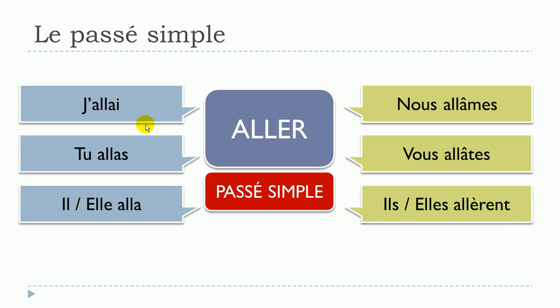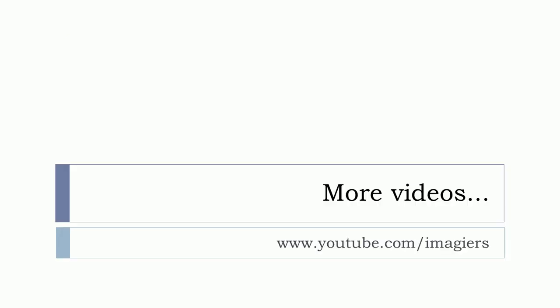Let's see one more time: j'allais, tu alla, il alla, elle alla, nous allâmes, vous allâtes, ils allèrent, elles allèrent. And that's it — you've got all the forms for le passé simple du verbe aller. I hope it was useful. Have a great day — au revoir et à bientôt!